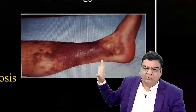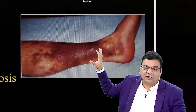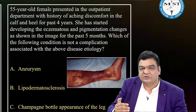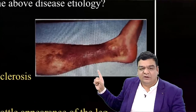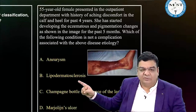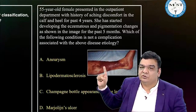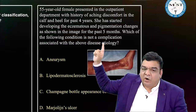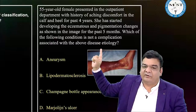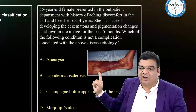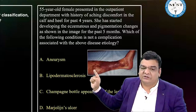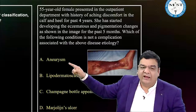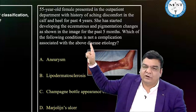You might also get an image-based question on lipodermatosclerosis or a venous ulcer. When solving image-based questions, see the image, look at the options — but please do not forget to read the last line of the question. For example, this shows lipodermatosclerosis, but the question asks: 'Which is NOT a complication associated with the above disease etiology?' So the answer is: vein aneurysm cannot occur. Be careful — always read the last line first.